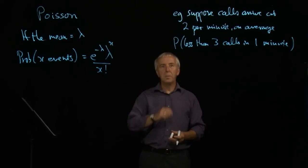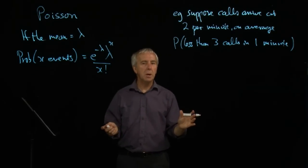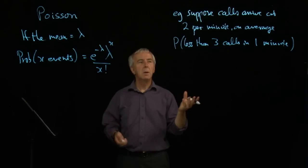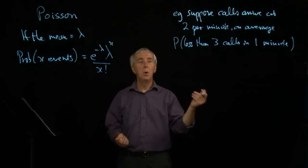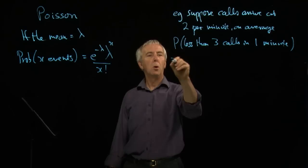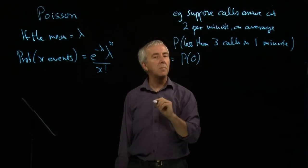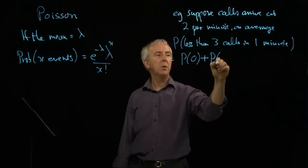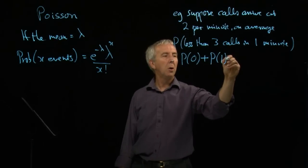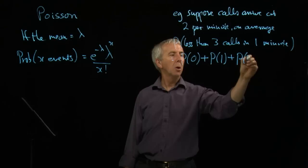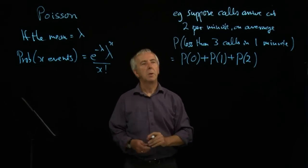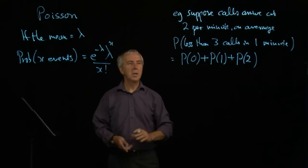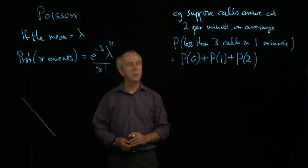What's the probability of less than three calls in one minute? Well, first of all, we have to think what does less than three mean? Calls can only be in whole numbers. You either get no call, or one call, or two calls. So it's the probability of no calls, or the probability of one call, or the probability of two calls. They are the only options for getting less than three calls in one minute.